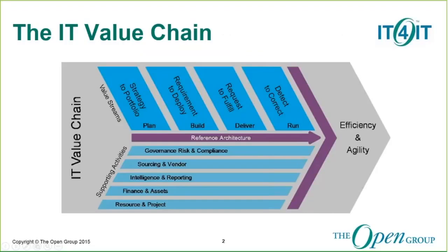It includes primary activities, which are depicted across the top of the diagram, as plan, build, deliver, and run. This can also be thought of as planning, production, consumption, fulfillment, and support, as realized by the IT for IT value streams. It also includes supporting activities such as finance, human resources, governance, and supplier management. These activities are tied together through the IT for IT reference architecture.